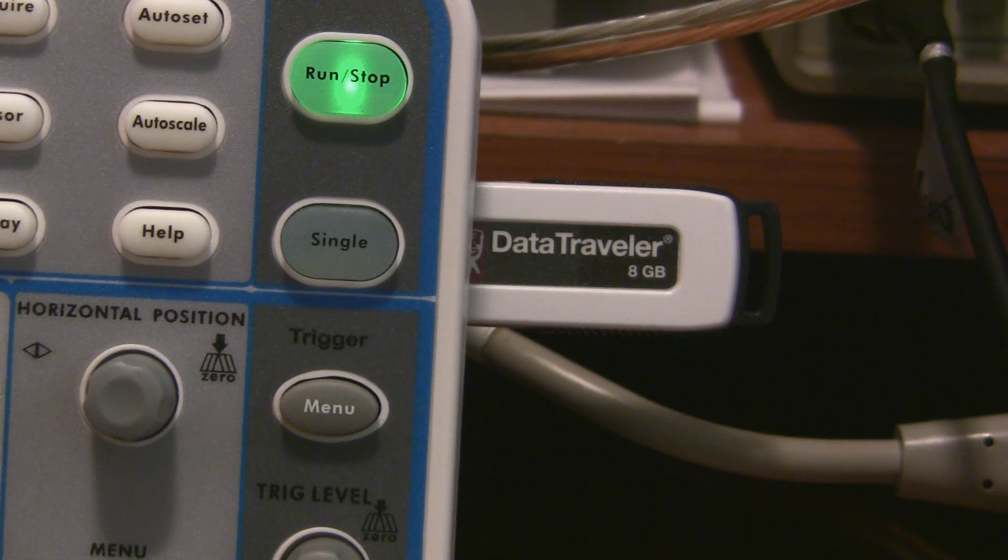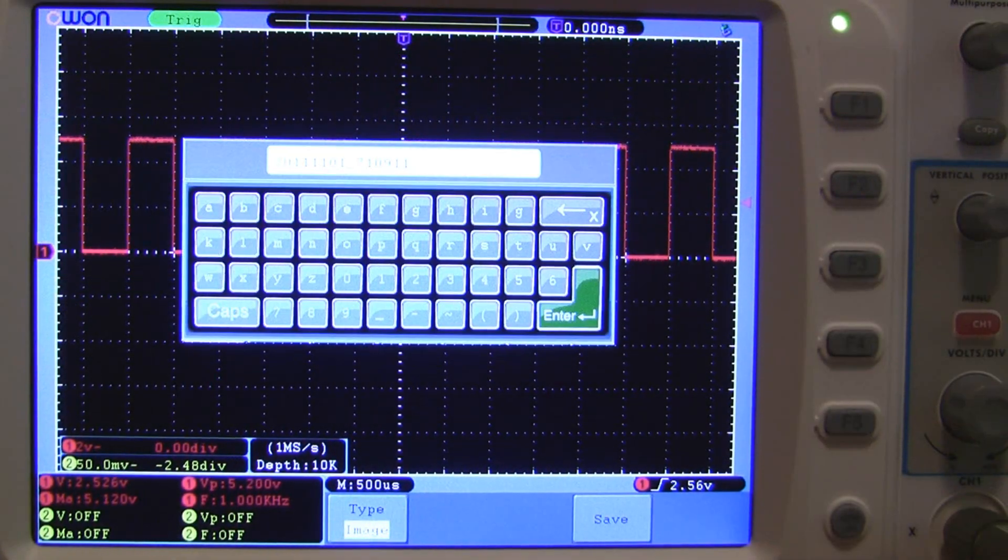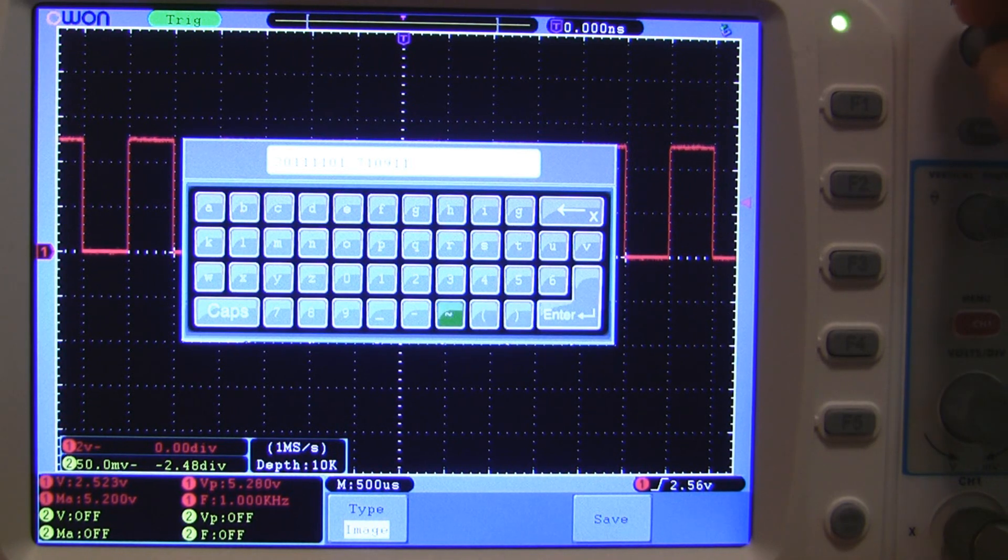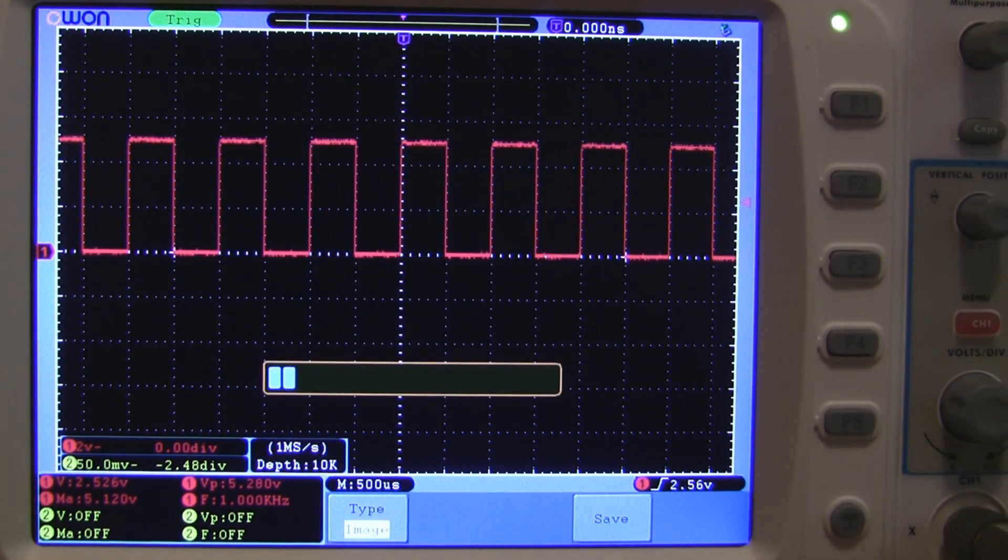Alright, now let's get into the little extra features that the 6062 has. You can use an external flash drive to save waveforms and images. It's pretty slow to use the on-screen keyboard, so I recommend just using the default filename and keeping notes.